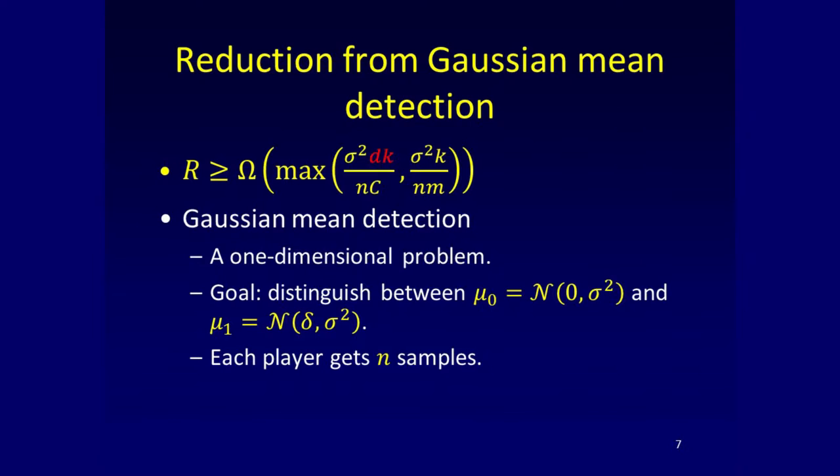There are too many parameters, and this is how a lot of communication lower bound proofs work: the goal is to reduce the number of parameters. The first reduction is to the Gaussian mean detection problem, which is a one-dimensional problem. We try to get rid of the multiplicative D by arguing that there are D dimensions and you have to deal with each one of them.